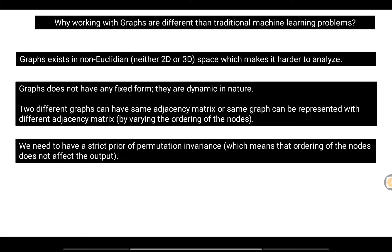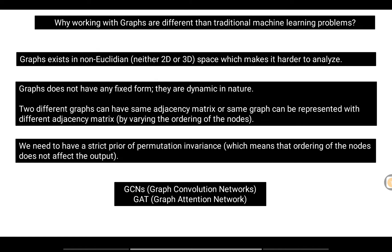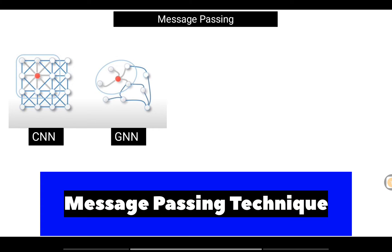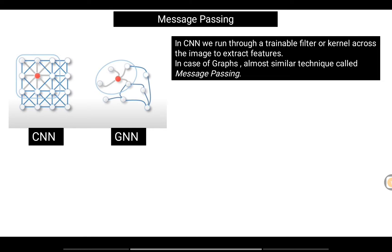Techniques like graph convolutional networks and graph attention networks try to solve these two problems — graphs not having a fixed form and existing in a non-Euclidean space. With the help of the message passing technique, which is the key focus of this video, we can solve any graph-related prediction task. In CNNs we run a filter across an image to extract features using a learnable kernel.